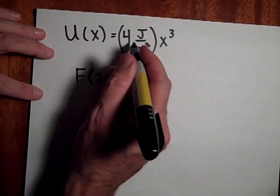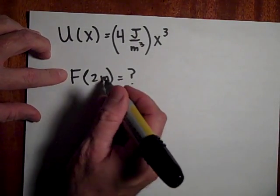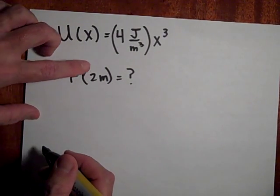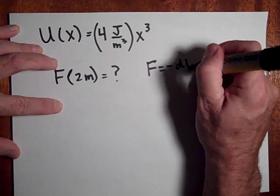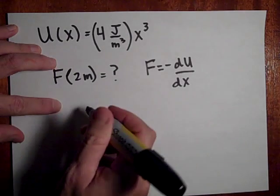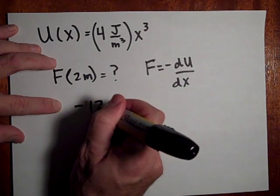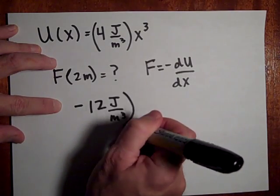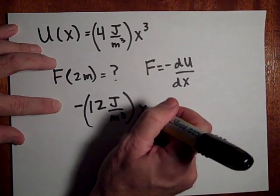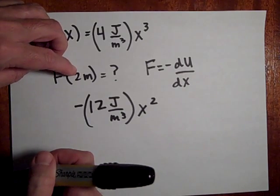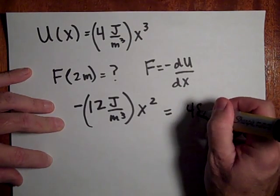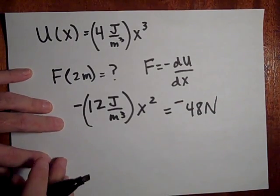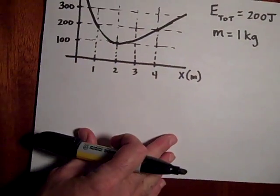Now, if you have a function that tells you how potential energy changes with x, and you want the force at 2 meters: the force is the negative derivative of U with respect to x. Taking the negative derivative gives negative 12x². Plugging in x = 2 meters: 12 times 4 equals 48, so the force is negative 48 newtons.